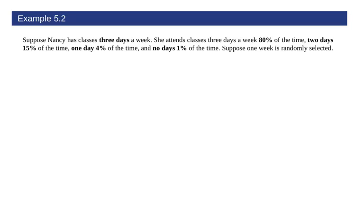Okay, so let's look at this example here. And so we're keeping track of Nancy has three classes three days a week. So she has some classes here at three days a week. And then here's the probabilities associated of how many she would attend. So she attends three, that's an 80% chance, two is 15%, then one is 4%, and then none of them would be 1% of the time. And so we're going to go ahead and we're going to suppose a one week is randomly selected here.